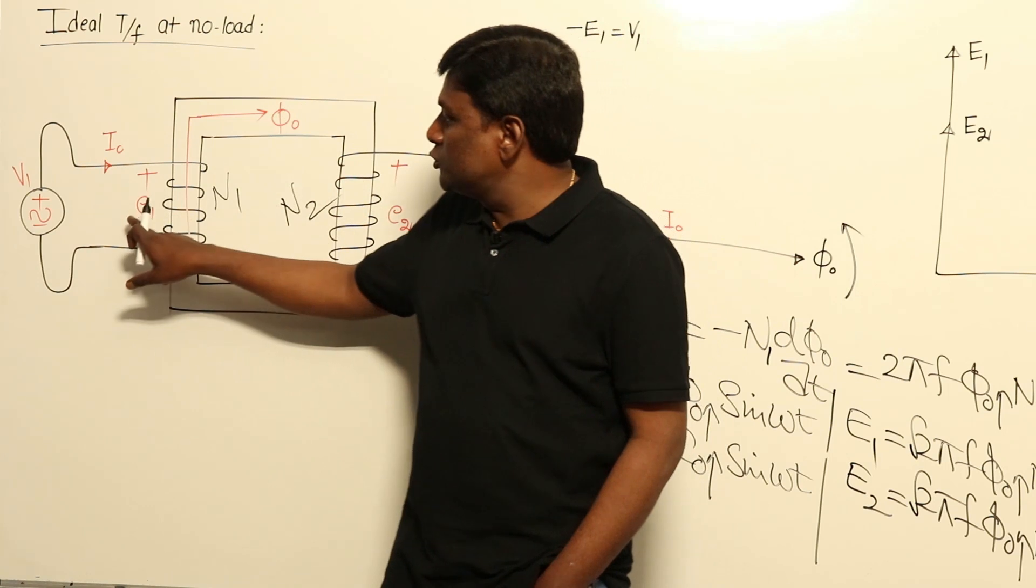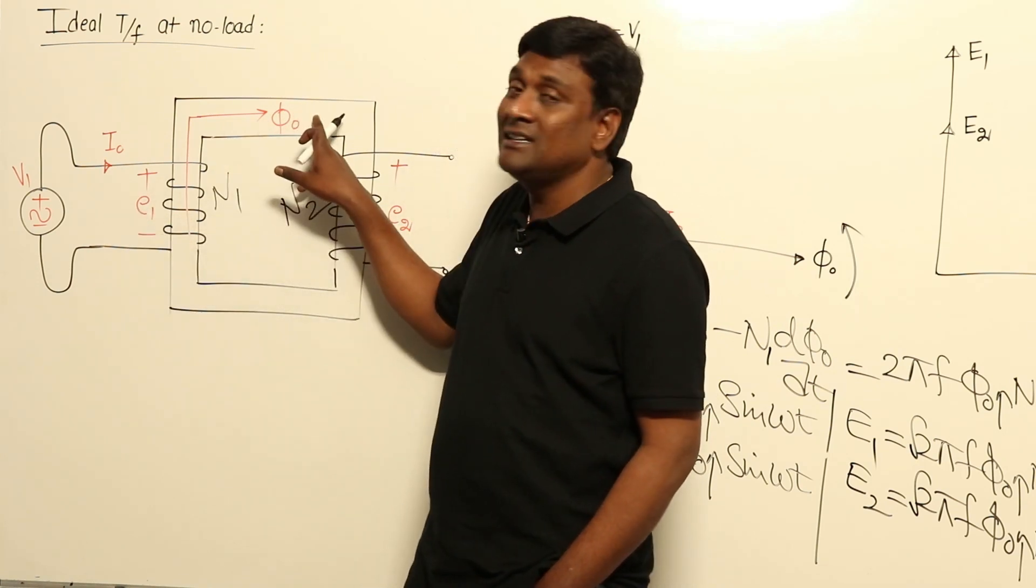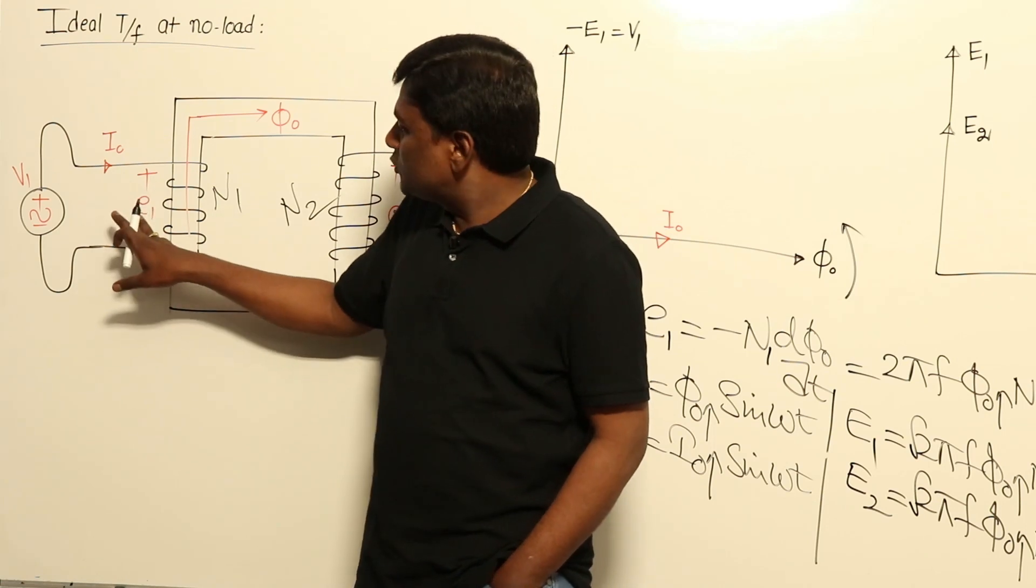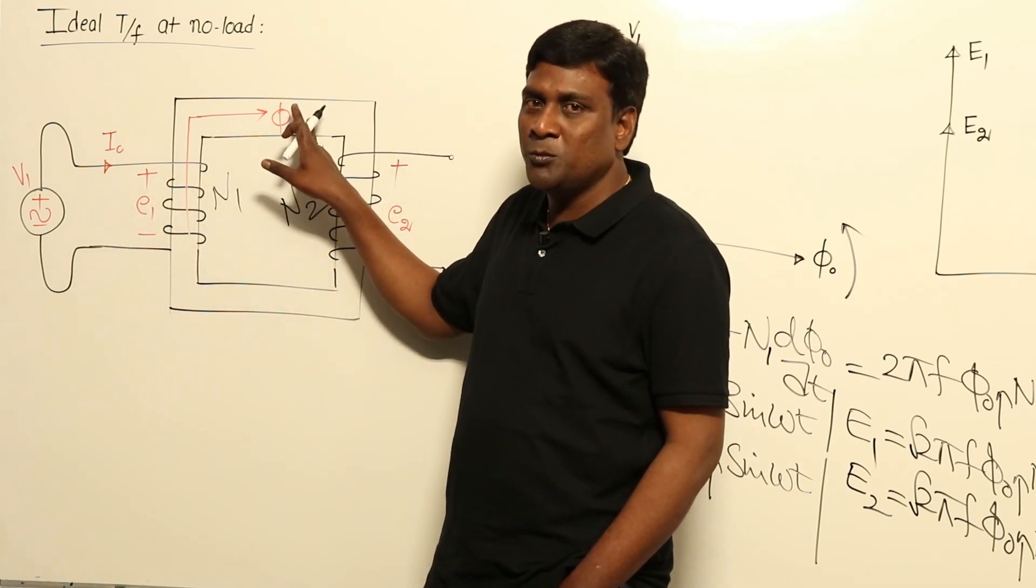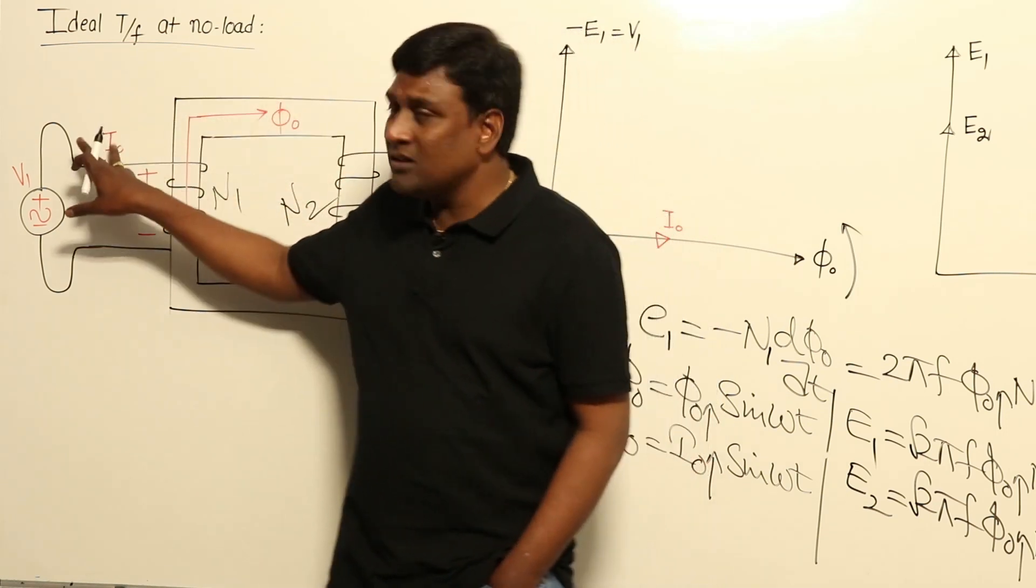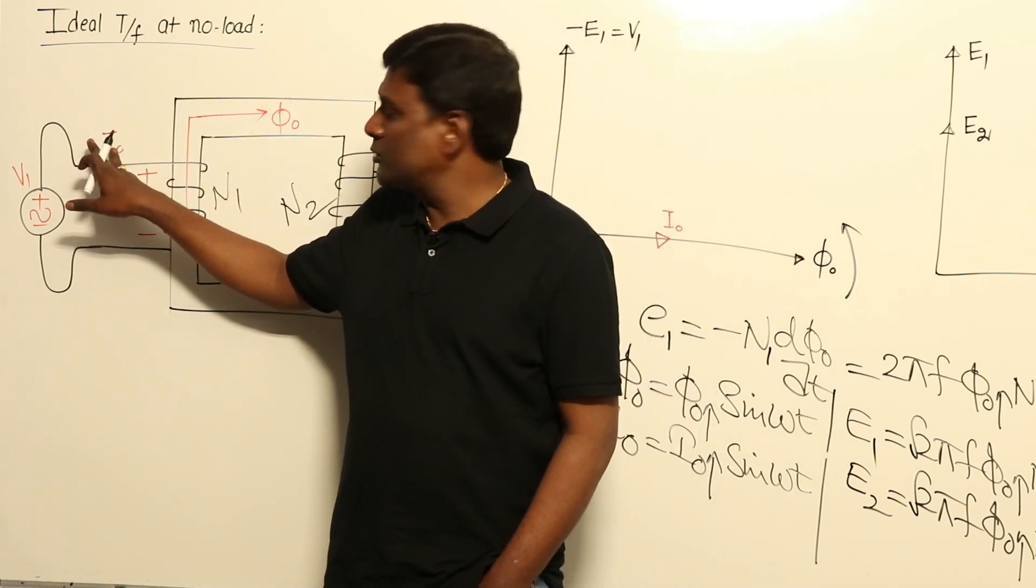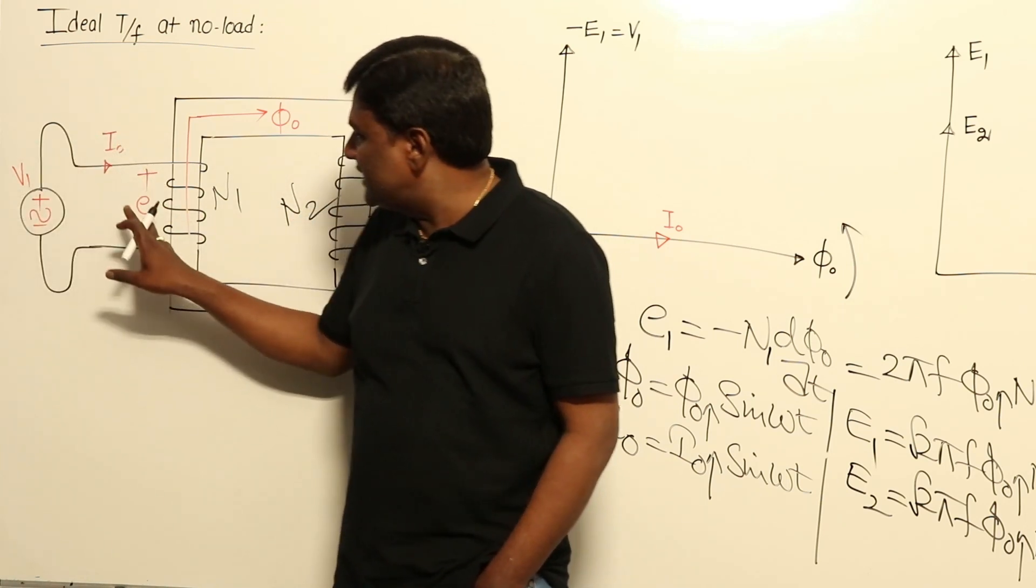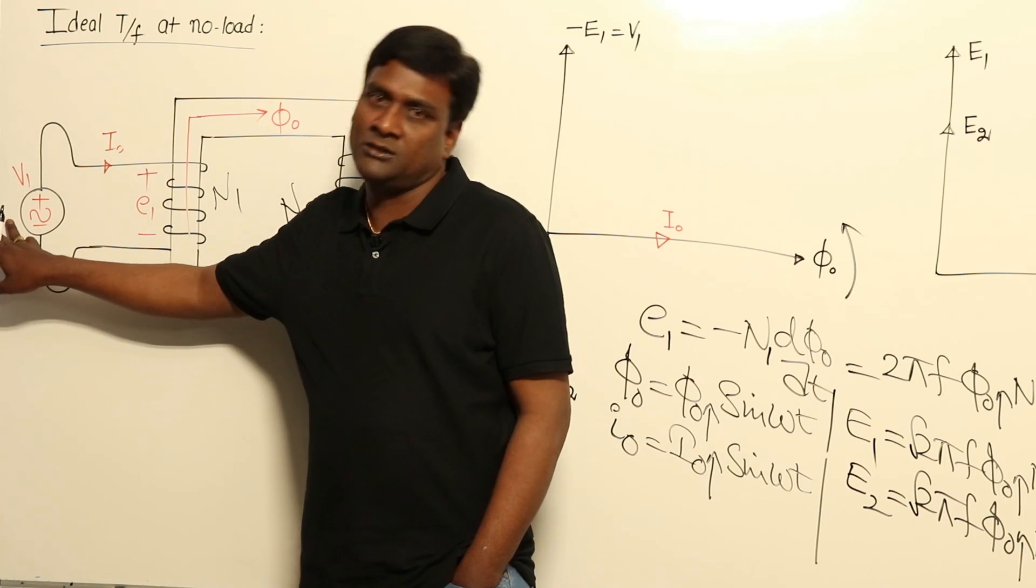As per Lenz's law, induced thing should oppose cause of its creation, but by the same dimensions. So voltage should oppose voltage only. So E1 is created because of Φ0, but Φ0 cannot oppose E1 because it is in webers, that is in volts. And Φ0 is created because of Φ0 - again opposition is not possible. So I0 is created because of V1. So E1 should oppose V1 is the point.